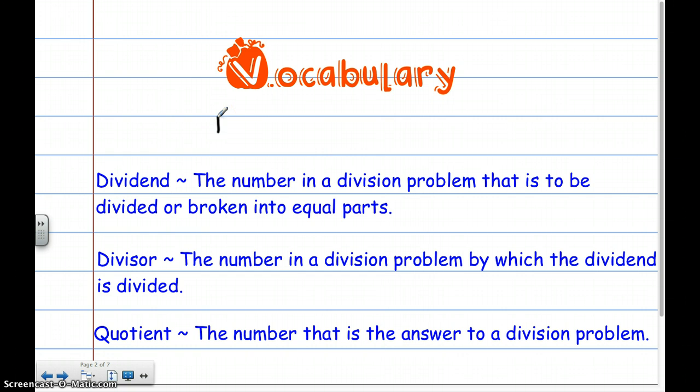Let's say that I had 12 divided by 6 equals 2. This is going to be the quotient. This is going to be the divisor. And this is the dividend, if you needed an example of what it looked like in the problem.